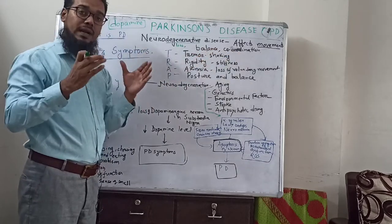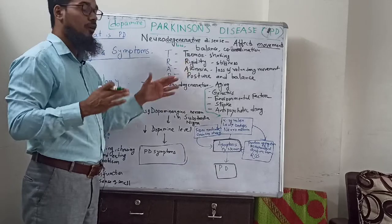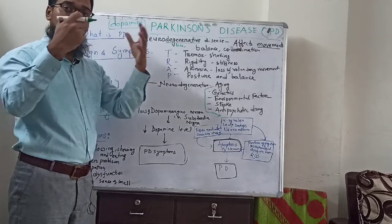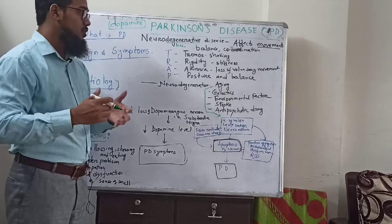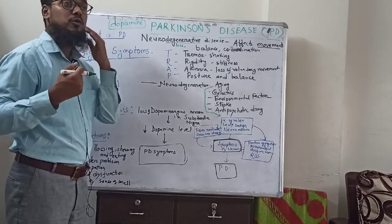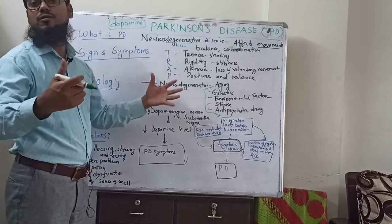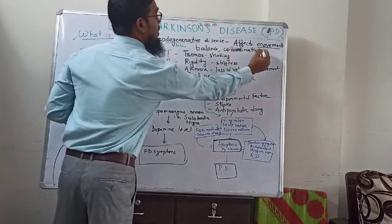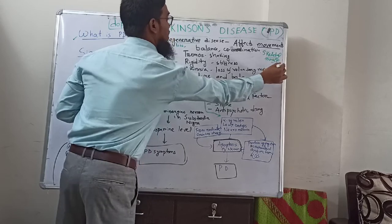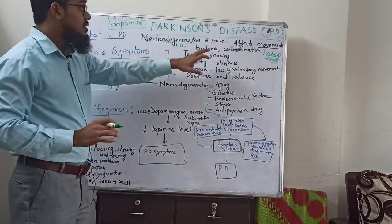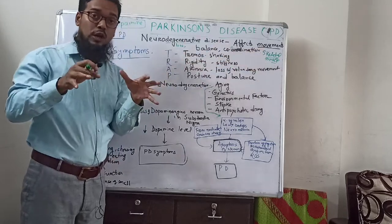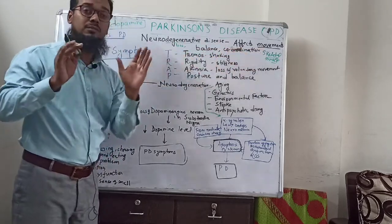It affects our movements, balance and coordination. We maintain posture, balance and coordination of our skeletal muscles. For example, when we walk, talk, or perform voluntary activities — voluntary activities mean we use our own sense to contract skeletal muscles, facial muscles, and other voluntary muscles. In Parkinson's disease, control over these things is lost, and due to this loss of control on voluntary muscles, balance and coordination, signs and symptoms occur.